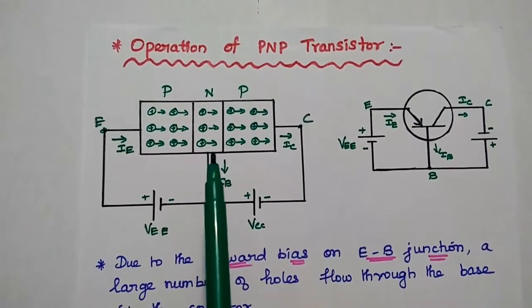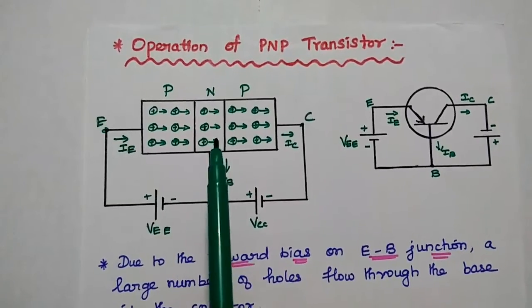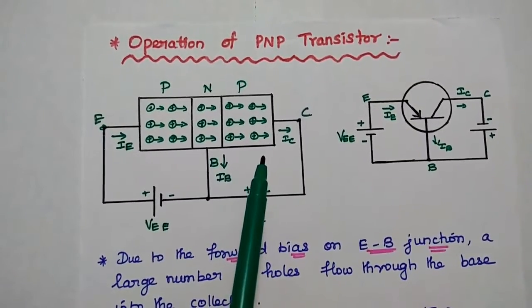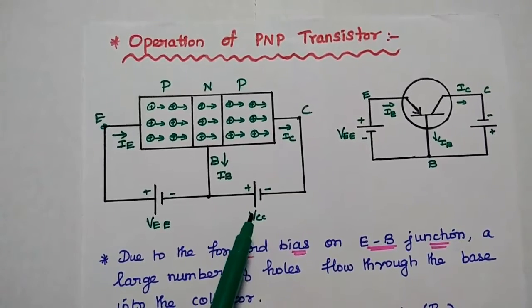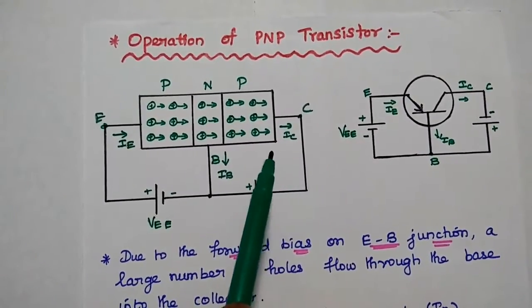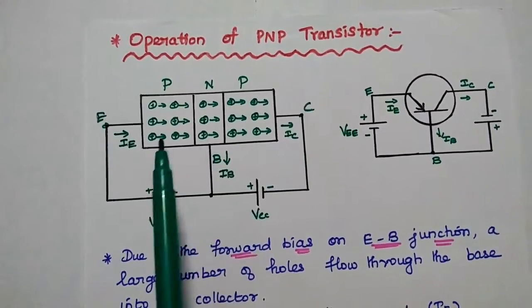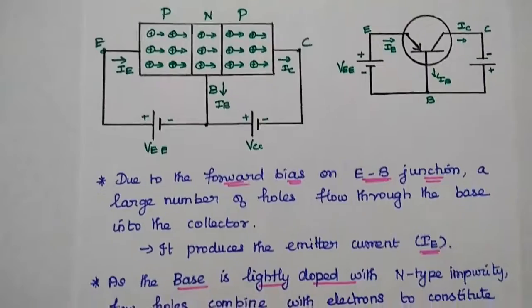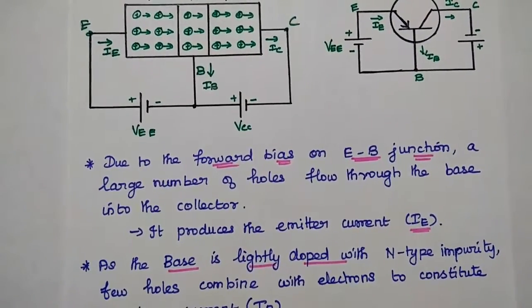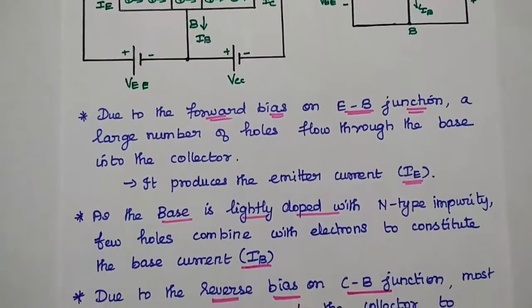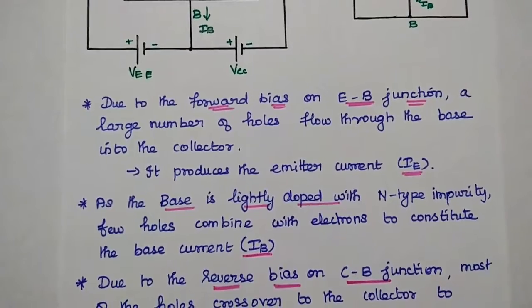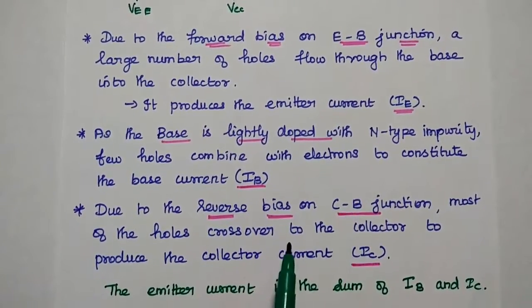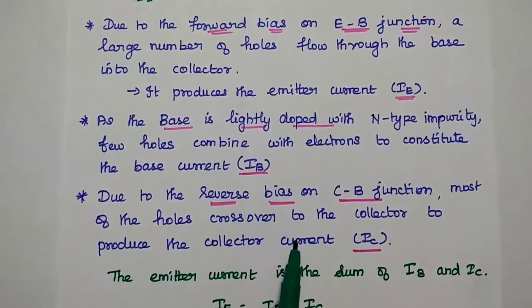This base region is lightly doped and very thin when compared with the two outer layers. So there is a small amount of current flow that constitutes the base current. The collector side is moderately doped and reverse biased. This negative terminal attracts the maximum number of holes from the collector, causing a continuous current circulation that constitutes the collector current. Due to forward bias on the emitter-base junction, a large number of holes flow through the base into the collector region, producing emitter current. As the base is slightly doped with N-type impurity, only few holes combine with electrons to produce the base current, which is very small compared to collector current.